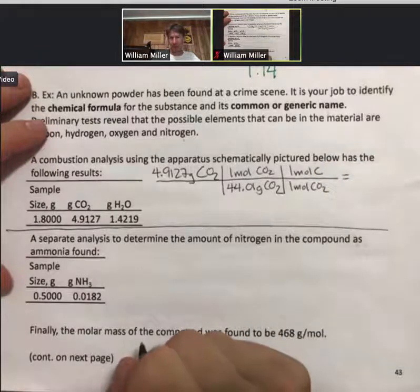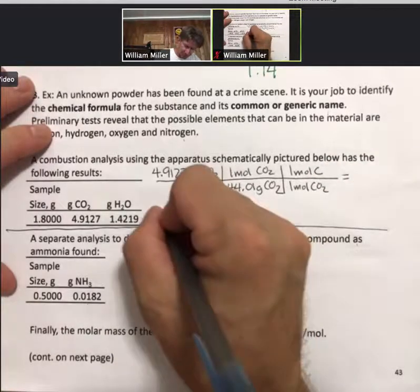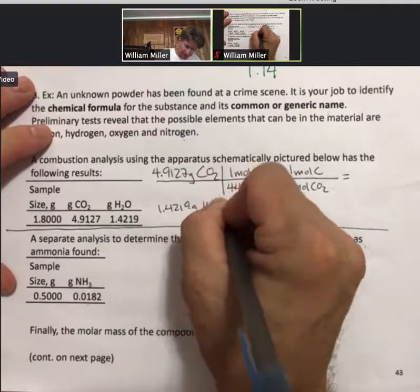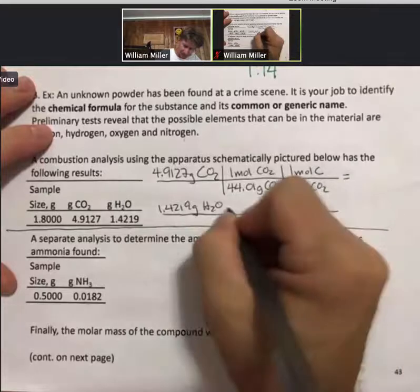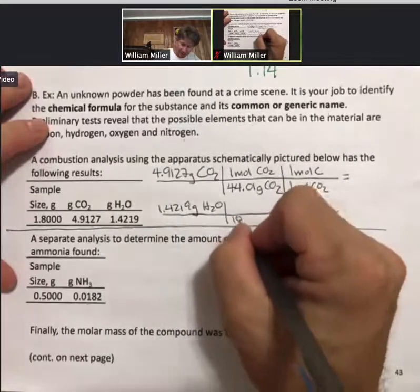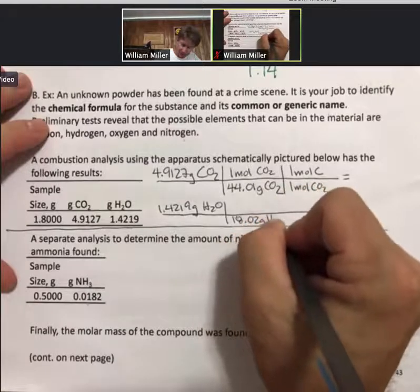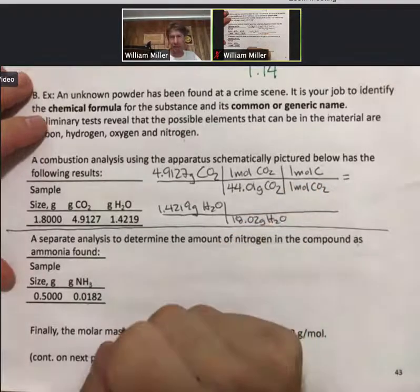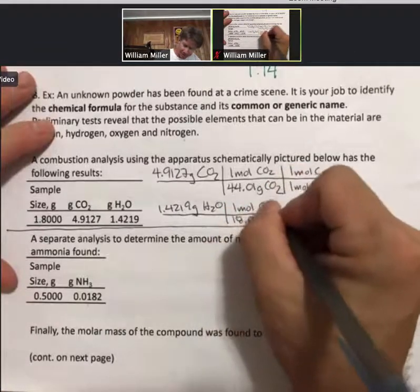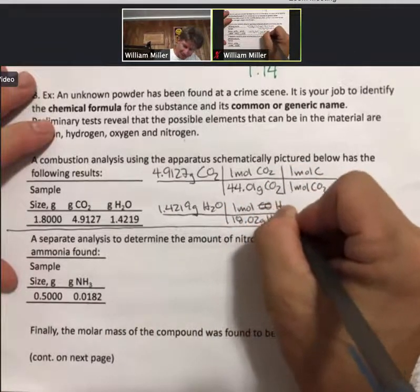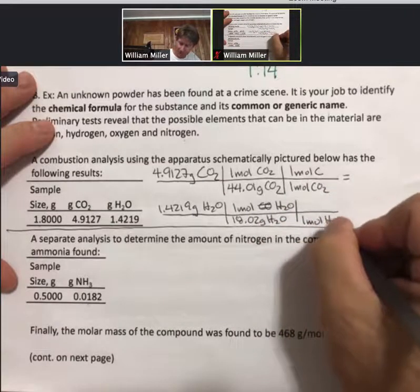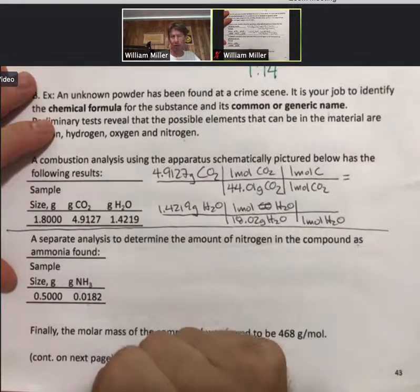Let me set up the H₂O. 1.4219 grams of H₂O, 18.02. And so this is exactly what you just did on the previous problem. I should say moles of H₂O. And in one mole of H₂O, there are two moles of hydrogen.